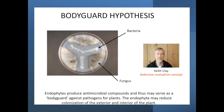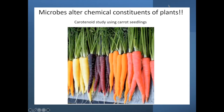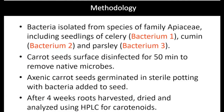Endophytes also affect the chemical contents of plants. In one study we did with carrots looking at carotenoids, my graduate student took endophytes out of celery, cumin, and parsley — relatives of carrot — giving us three different bacteria, which we put into carrot and evaluated carotenoids using HPLC analysis.